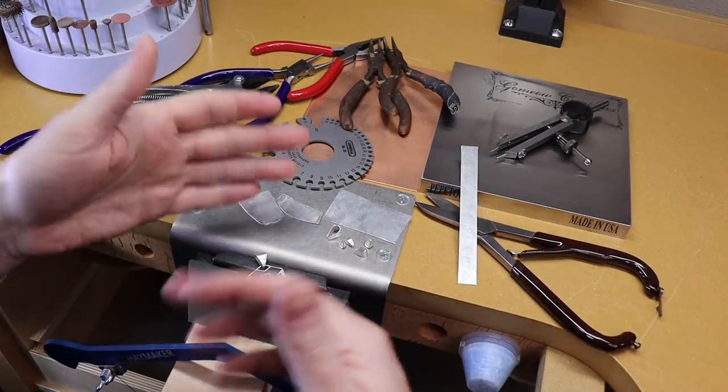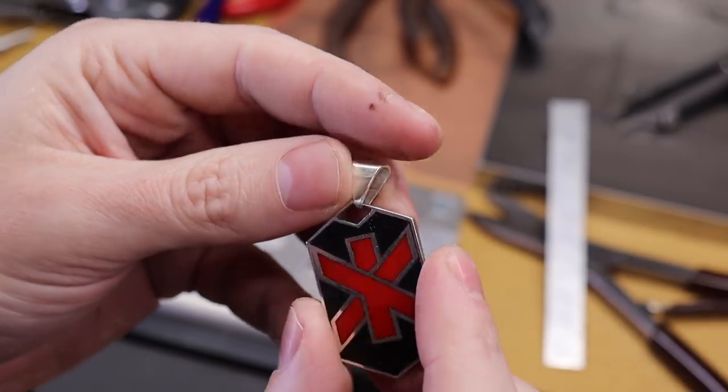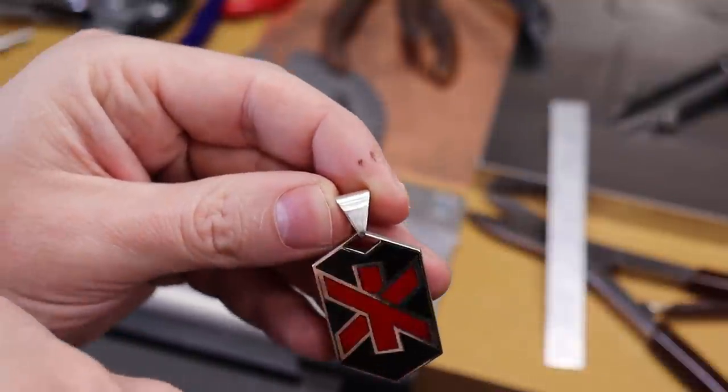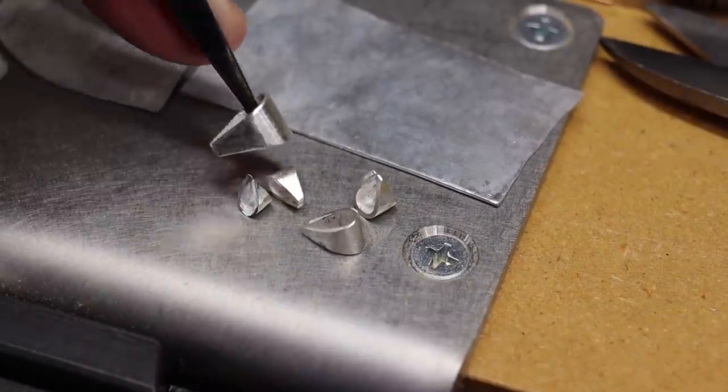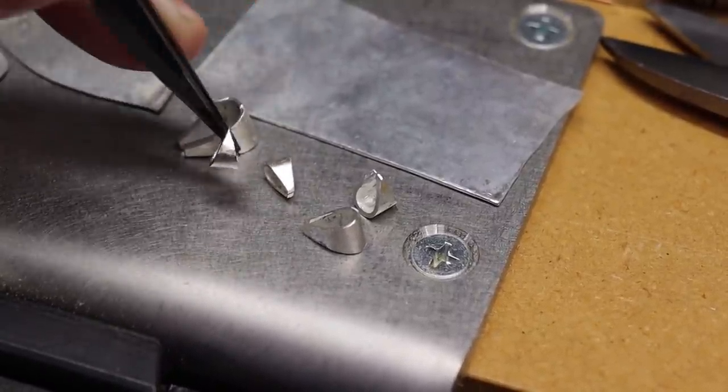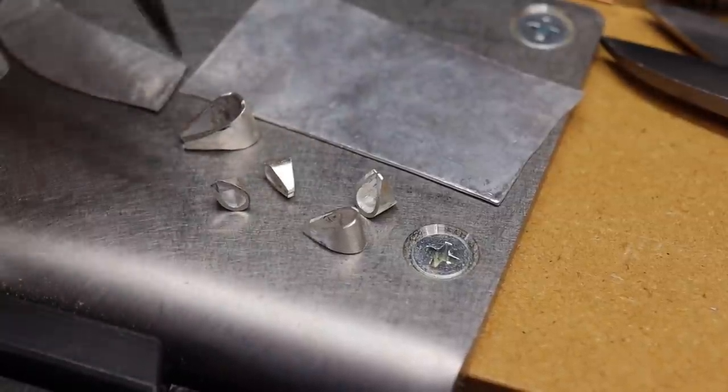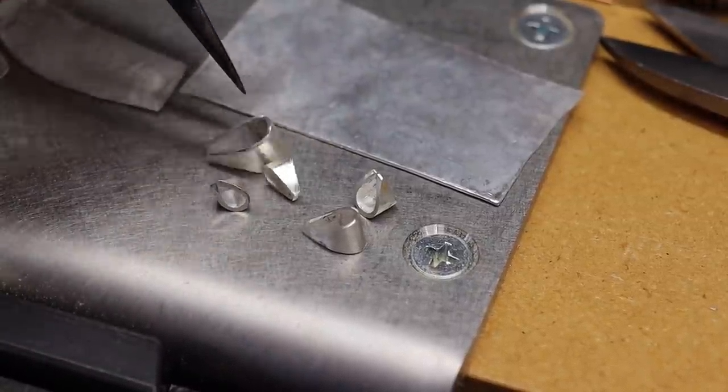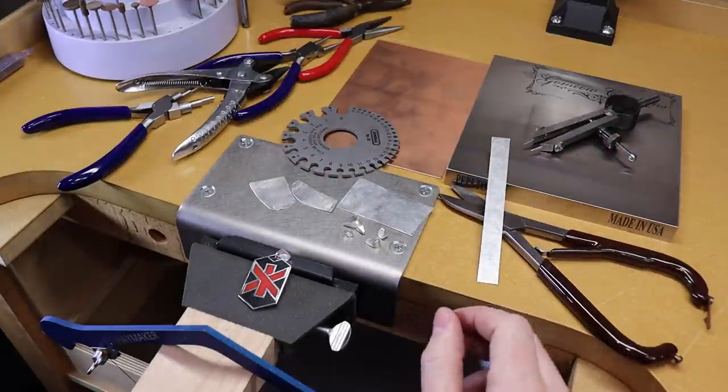So to start things off, and if you didn't already know, a bail is this little thing that allows you to hang your pendants and connect it to your chain. It also allows your chain to kind of slide through it and move around. You could also make them in a ton of different sizes to fit whatever you need. You're not going to need everything that's up here. It's just going to be a bunch of different options to show different ways of doing it.